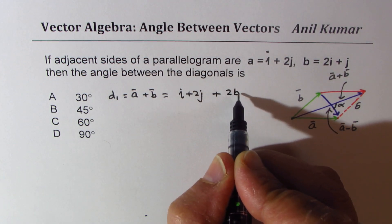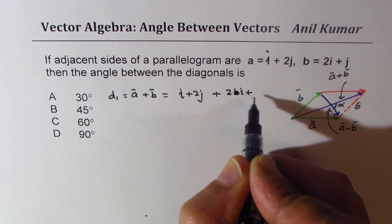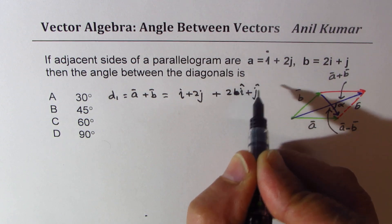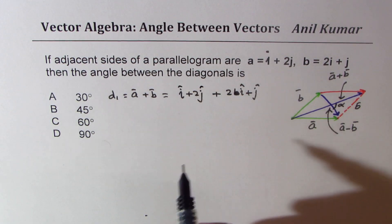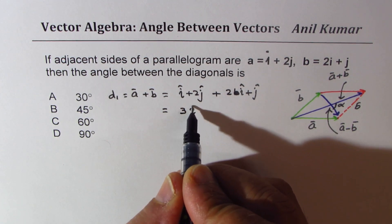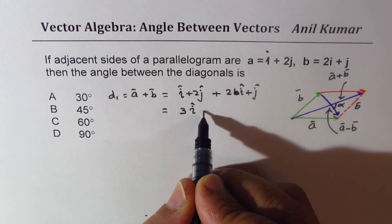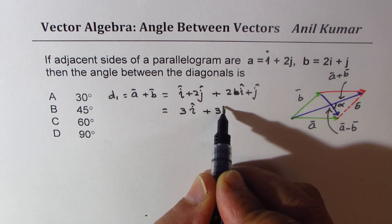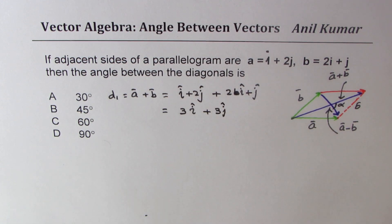These are unit vectors in i and j directions. So when you add them, you get 3i + 3j. So that is the vector a + b.